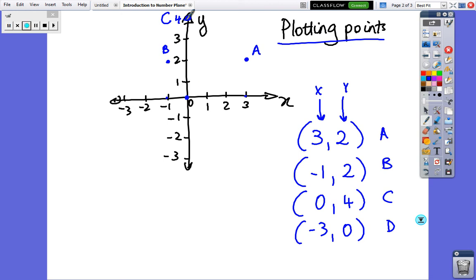And the last point has minus 3 for the X. So minus 3 for the X and has no Y. So that means it stops on the axis, and that's point D. Have a look, have a copy that down if you need to, and then come across to the next slide.